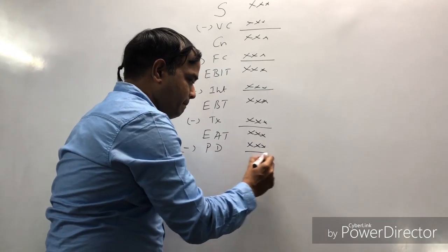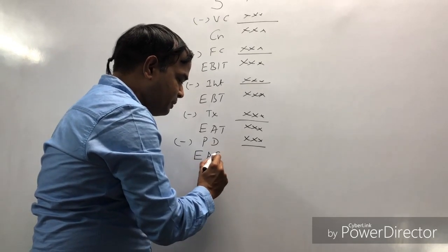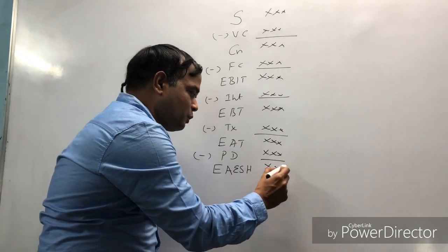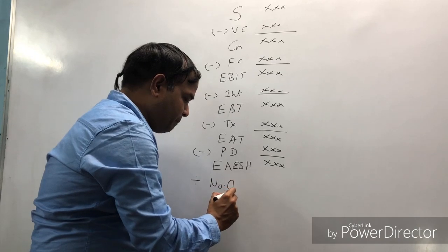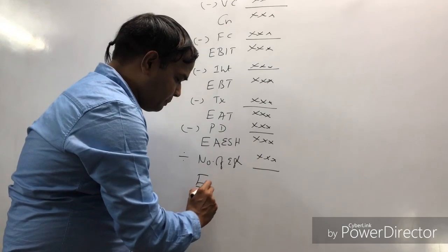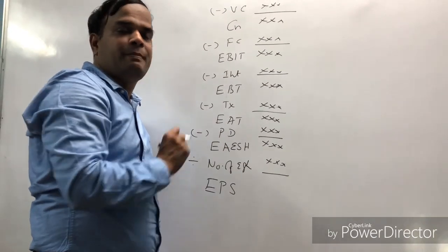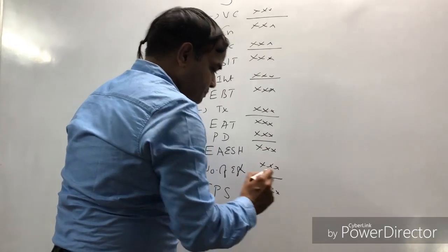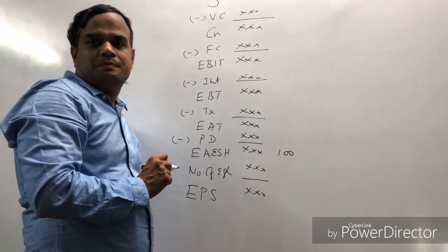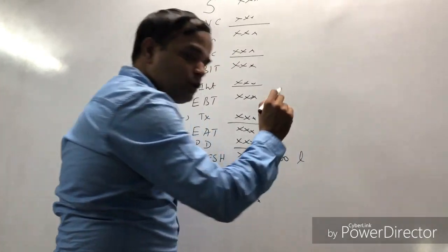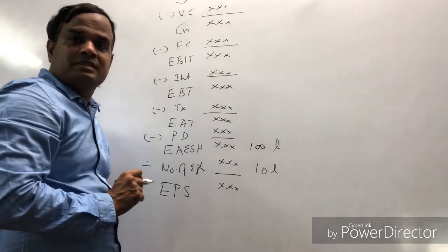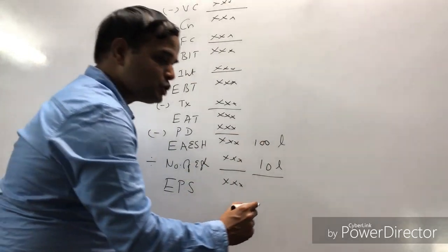Less preference dividend, if any, the balance is called earnings available to equity shareholders. Earnings available to equity shareholders divided by number of equity shares is called Earning Per Share (EPS). For example, if earnings available to equity shareholders is equal to 100 lakhs and number of equity shares is equal to 10 lakhs, what is the EPS?